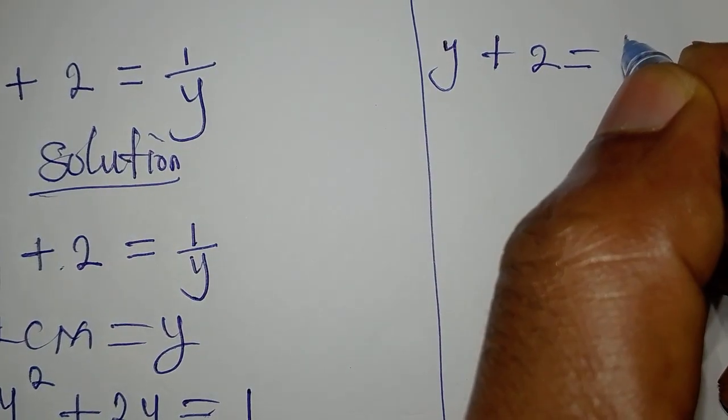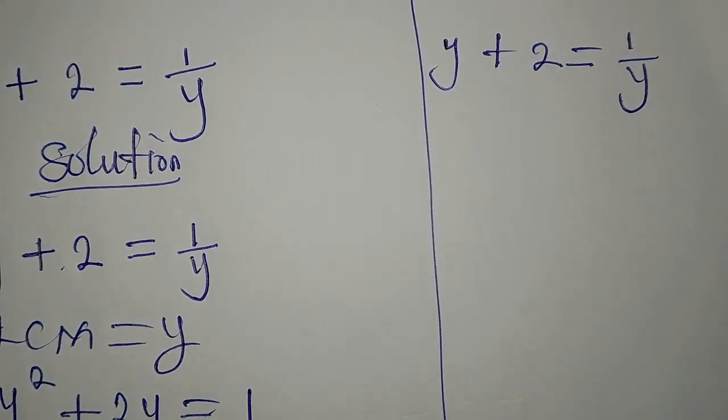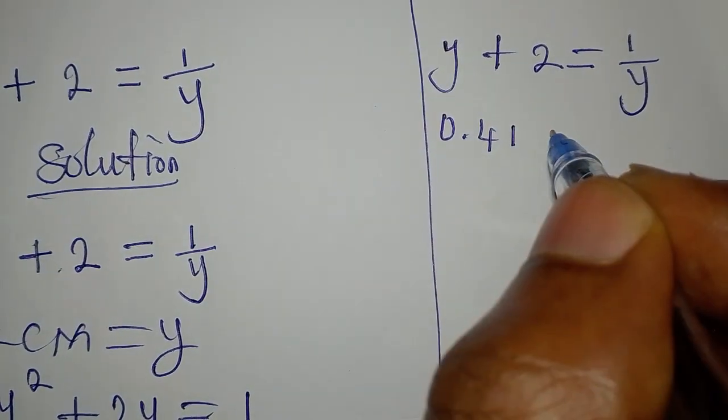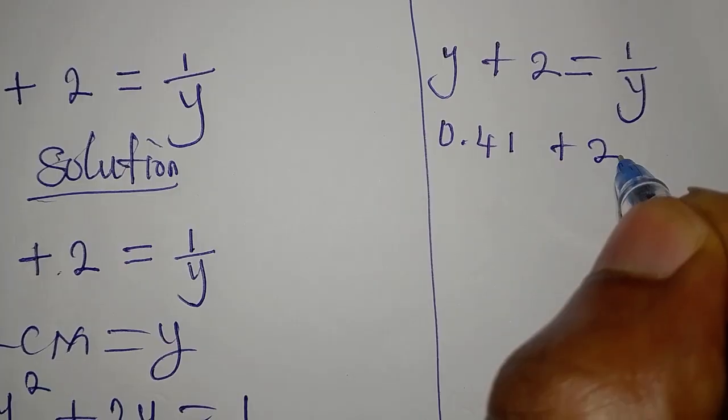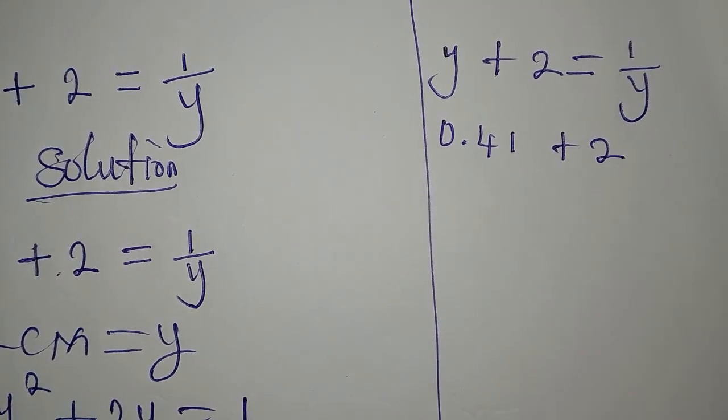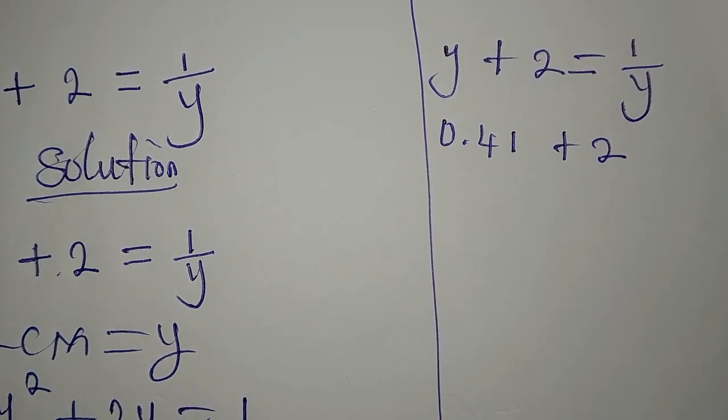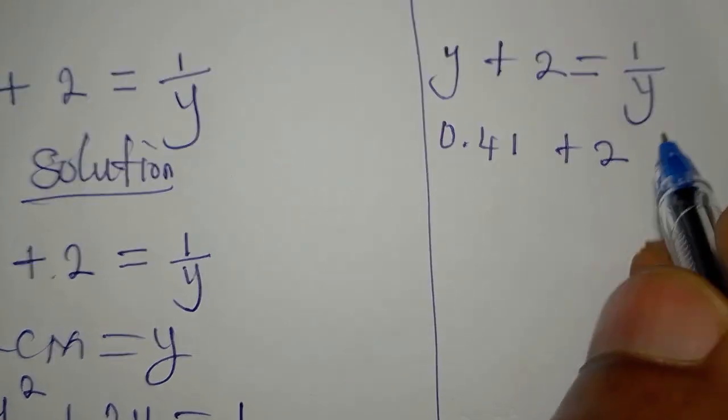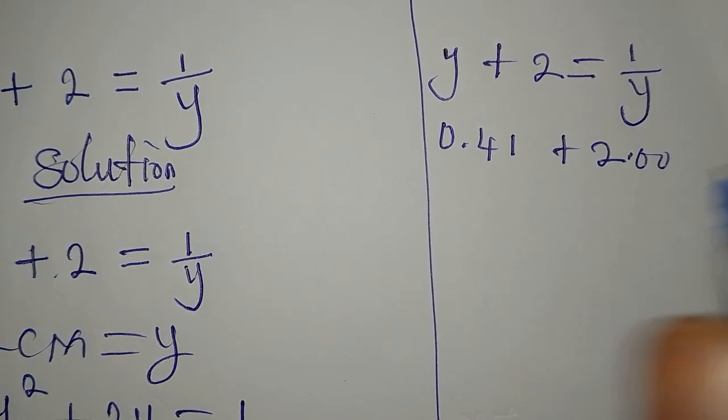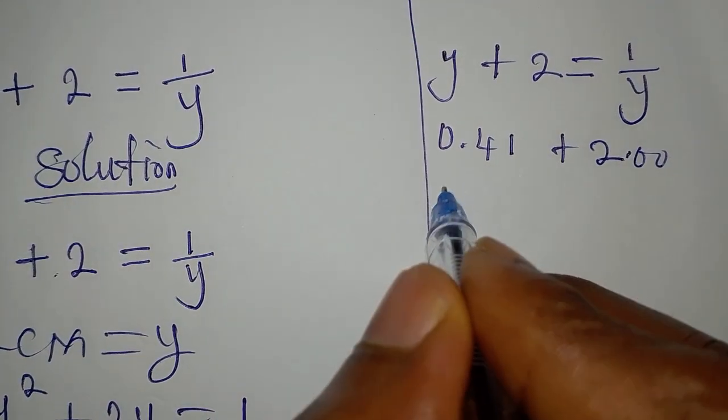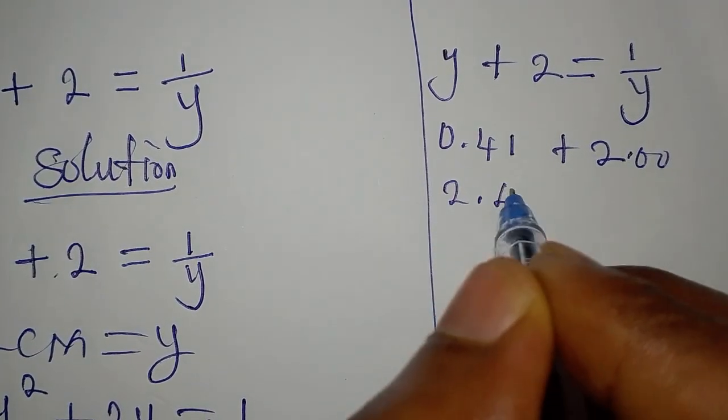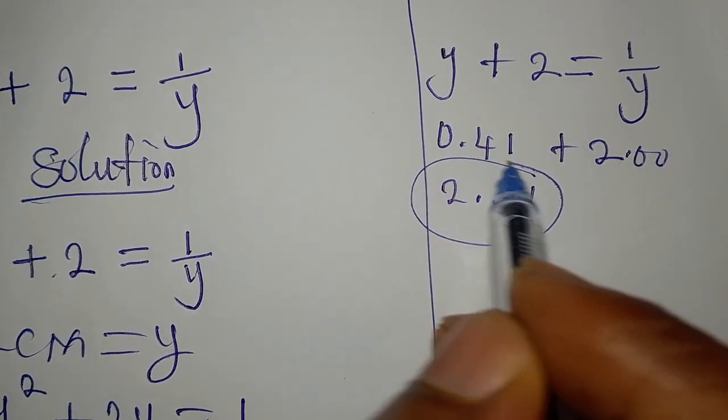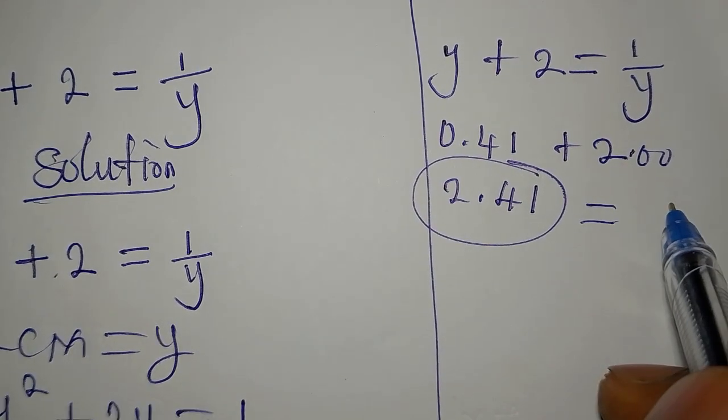If you can recall, the equation again is y plus 2 equals 1 over y. Now let's use y to be 0.41 plus 2. This is going to give, if you are adding it, 2.441. That is on the left hand side.